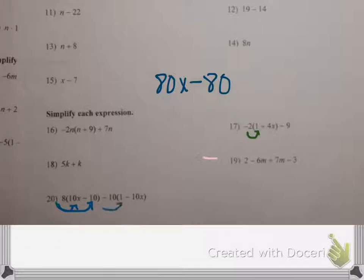Alright, so that's that part. Negative 10 times a positive 1 is negative 10. And a negative 10 times a negative 10x is positive 100x. Alright, so we've gotten all the distributing done, so now we just need to look at how many terms do we have.